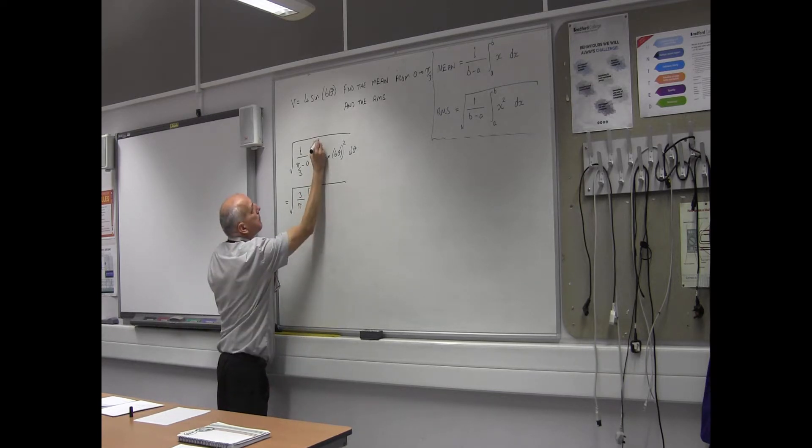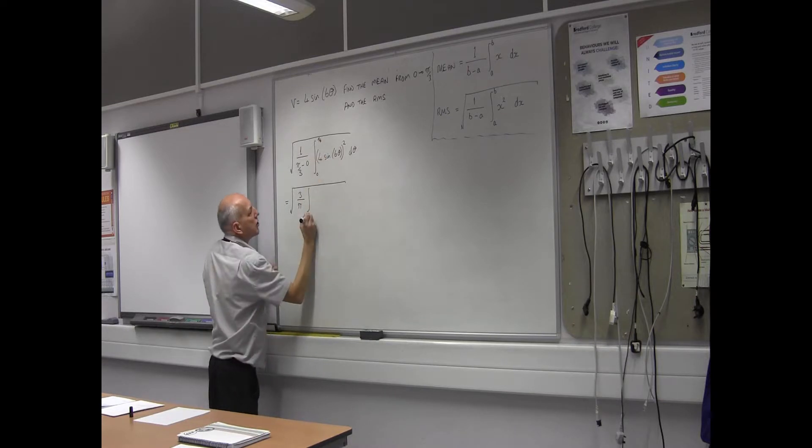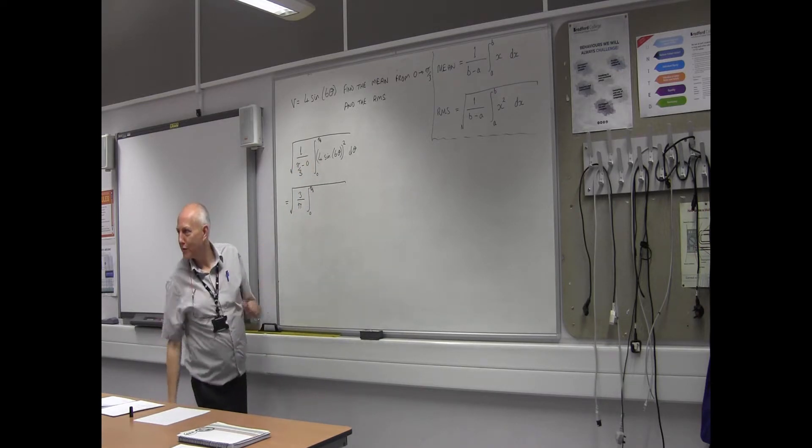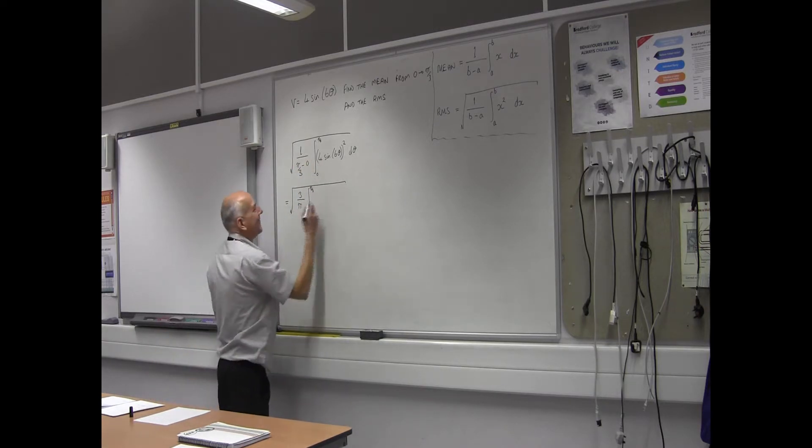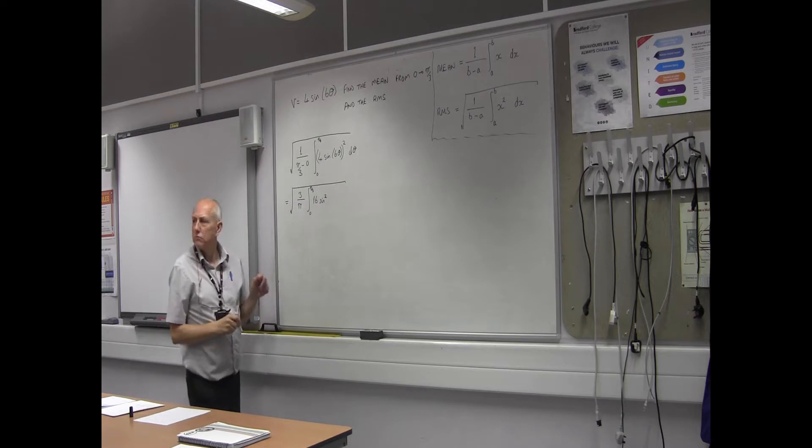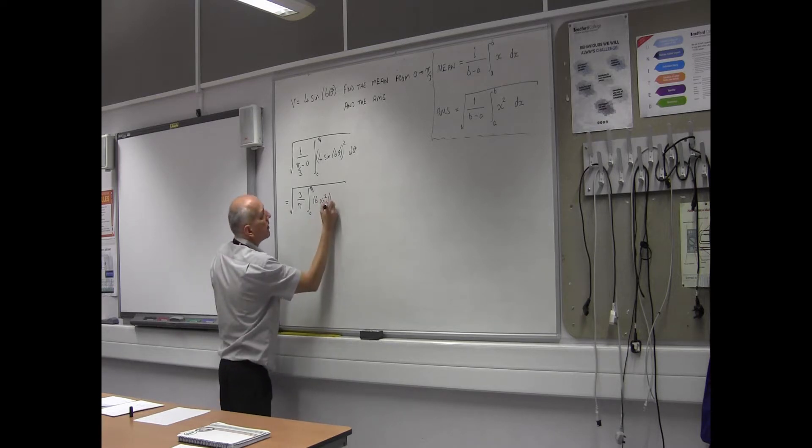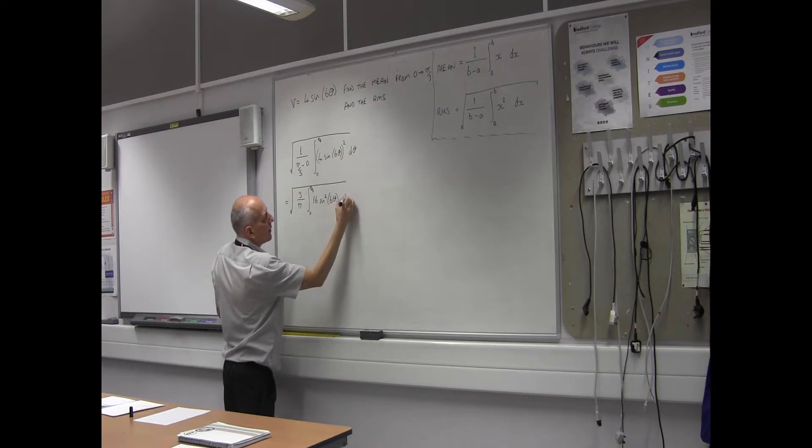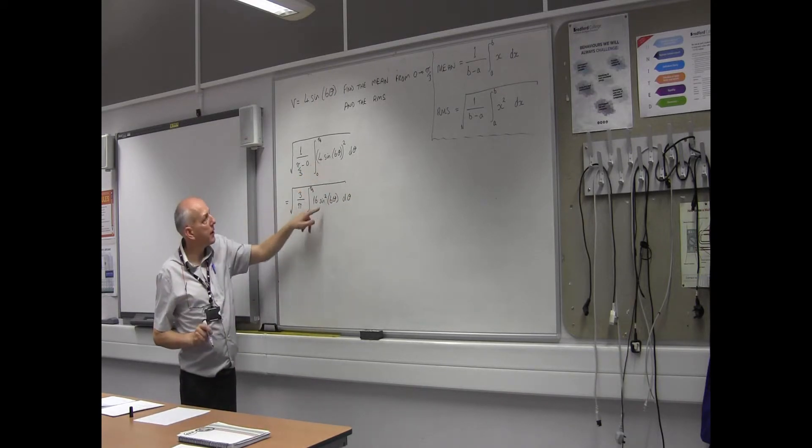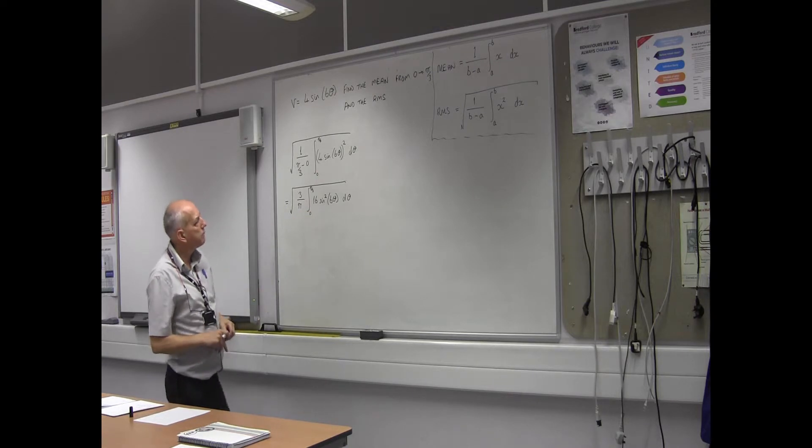Forgot my limits on there, 0 to π/3 again. So if I square 4, what do I get? 4 times 4, 16. Sine, and you remember the other way of writing it like that to mean it's squared, 6θ dθ.